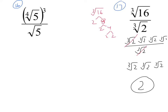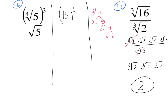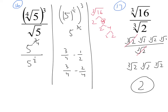For the last problem, I don't have the same type of radical — the top has a fourth root and the bottom has a square root — so I rewrite using fractional exponents. The top is 5 to the one-fourth, that whole thing cubed, which is 5 to the three-fourths. Divided by the square root of 5, which is 5 to the one-half. Subtracting exponents: three-fourths minus one-half is three-fourths minus two-fourths, which is one-fourth. The final answer is 5 to the one-fourth, or the fourth root of 5.